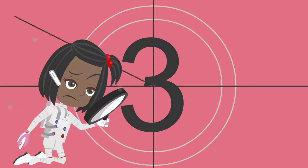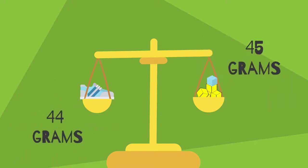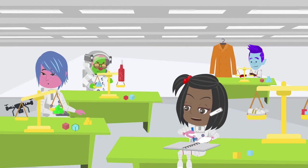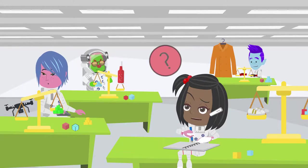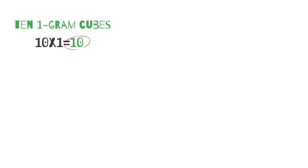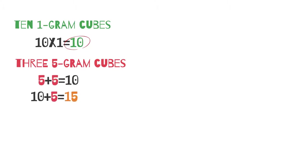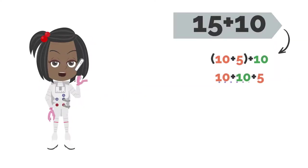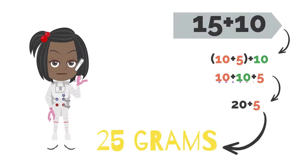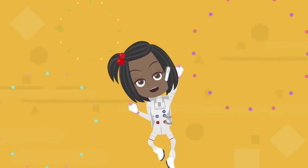If she was off by even one gram, Ms. Lagrange would not accept it. Ten one gram cubes is ten grams. Three five gram cubes is. She did that math on the paper. Five plus five is ten. Ten plus five is fifteen grams. Then add the ten and fifteen together. I know that ten plus ten is twenty. That leaves another five. Twenty plus five is twenty-five grams. Only two piles left to go.